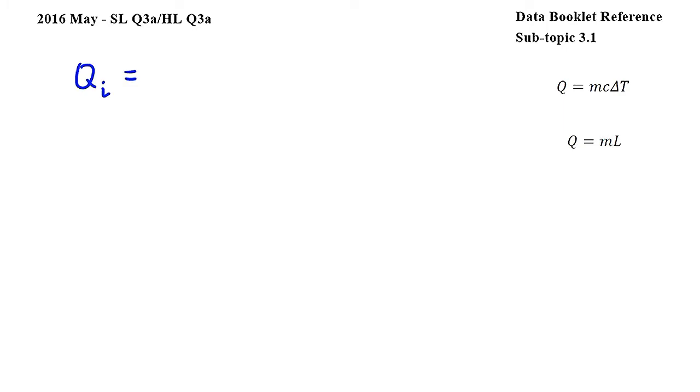I will label this energy QI. First, the ice cube melts. To calculate the energy gained by the ice during melting we will use this equation from subtopic 3.1 where Q is energy, M is mass and L is specific latent heat of fusion.